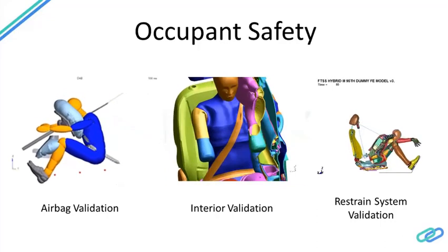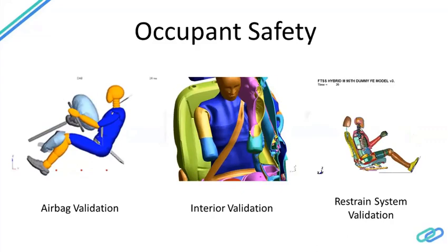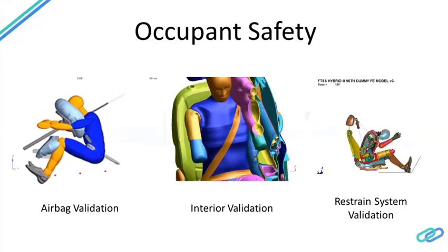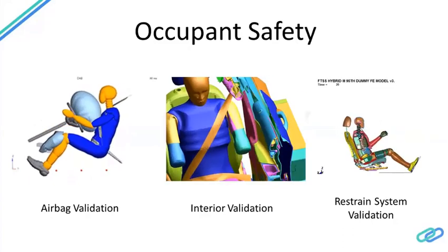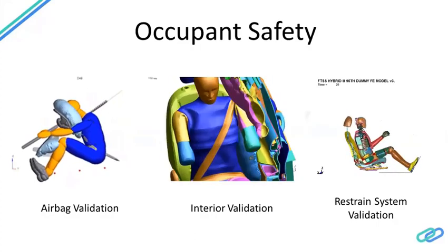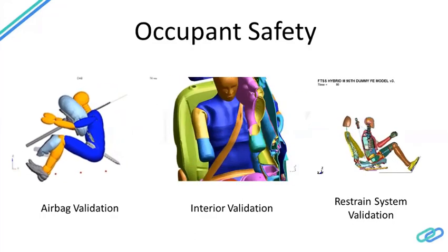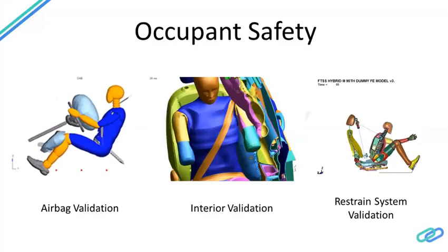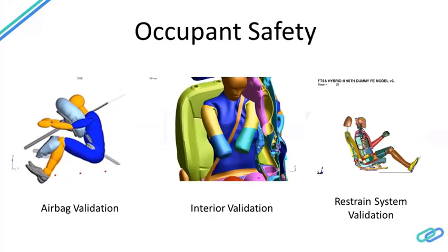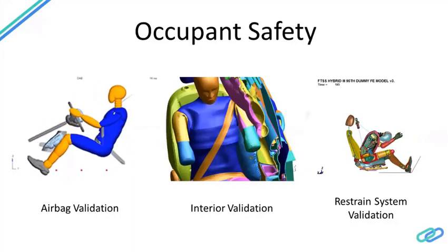For occupant safety, there are four major contact points: the driver contacts the steering wheel; the front co-passenger contacts the dashboard; and rear-seat passengers contact the seats. To protect these occupants, the frontal passenger compartment is validated using airbags — driver airbag, passenger airbag, knee airbags in luxury cars, and side curtain airbags. In a side crash, the first contact point is the door trim, which must be validated so it doesn't form sharp edges that could injure the passenger.